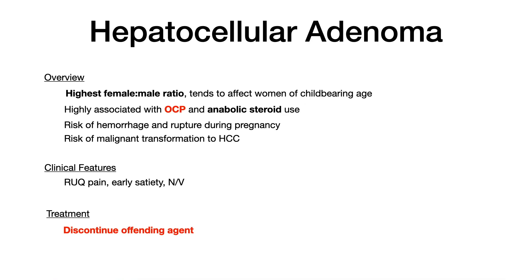For hepatocellular adenoma, this has the highest female to male ratio of all benign liver tumors, tending to affect women of childbearing age. What's incredibly important to memorize is that hepatocellular adenoma is highly associated with two substances: oral contraceptives and anabolic steroids. If a patient is on either one and presents with clinical features suggestive of a liver growth, that association must fire in your head. It also carries a risk of hemorrhage and rupture during pregnancy and malignant transformation to hepatocellular carcinoma.